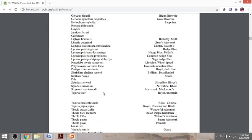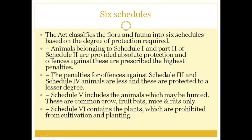Schedule 3 and Schedule 4 include animals requiring lesser protection. In Schedule 5, animals which may be hunted are included — for example, common crow, fruit bat, mice, and rat. These animals are permitted to be hunted and are provided under Schedule 5 of the Wildlife Protection Act. Under Schedule 6, plants are included — specifically, plants which are prohibited from cultivation and planting. These are the six schedules of the Wildlife Protection Act.